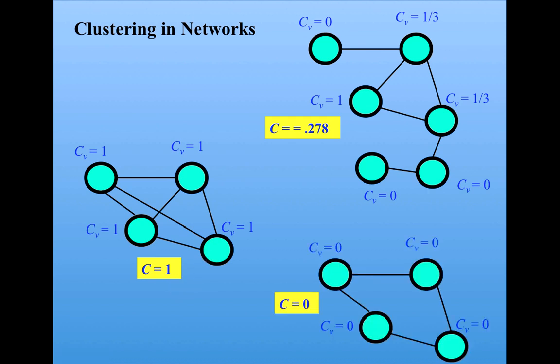Or a network like this one, in which each node is connected to two other nodes, but none of the pairs of neighboring nodes are connected. And this one has a clustering coefficient of 0.